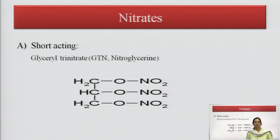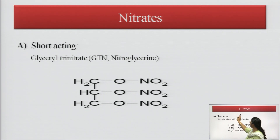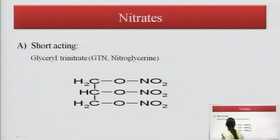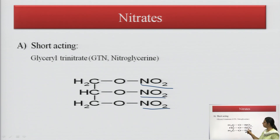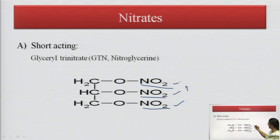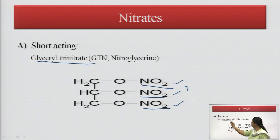The first class — nitrates — includes the short-acting glyceryl trinitrate, also known as nitroglycerin. In this structure, if hydrogen atoms were present it would be glycerol. Each of the three hydrogen atoms has been replaced by a nitro group (NO₂), giving three nitro groups on glycerol — hence the name glyceryl trinitrate.